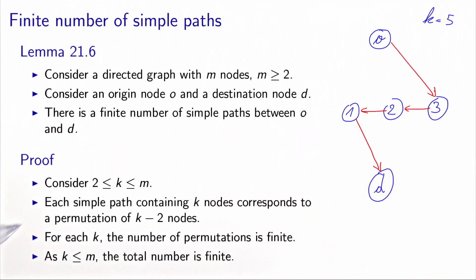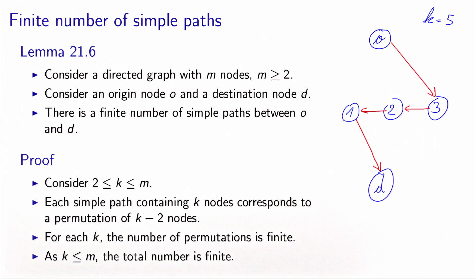Each simple path containing K nodes, five in this example, corresponds to a permutation of K-2 intermediate nodes. So it means that for each value of K, the number of such permutations is finite. Since K is bounded by the number of nodes M, the total number of simple paths is finite. It can be quite large, but it's finite.